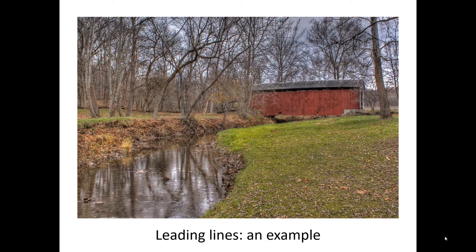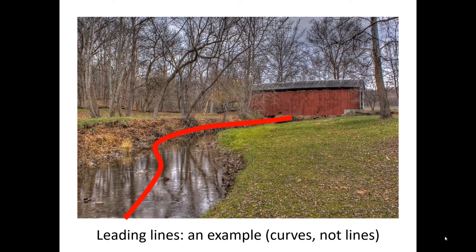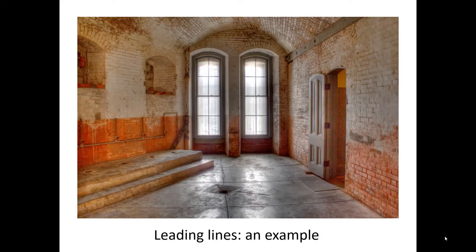Another example of composition are leading lines, and they really don't have to be lines — they can also be curves. You try to use a line or curve to lead your viewer's eye from the foreground all the way to the back where your subject is. In this case, the stream creates a curved line leading towards a covered bridge, which was the subject of the photograph.